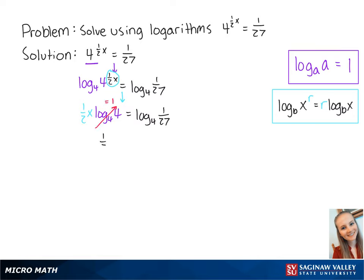we now have 1 half x equals the log base 4 of 1 over 27. If we multiply both sides by 2, we get x equals 2 times the log base 4 of 1 over 27. This is the final answer.